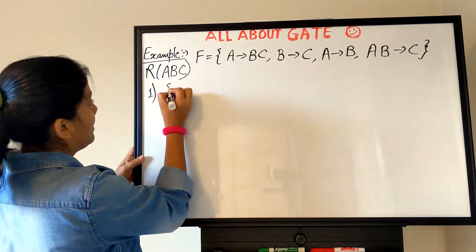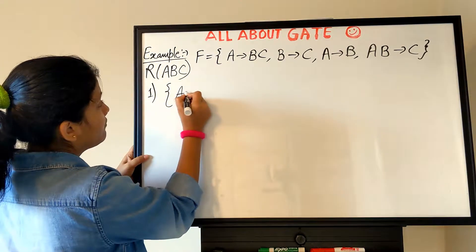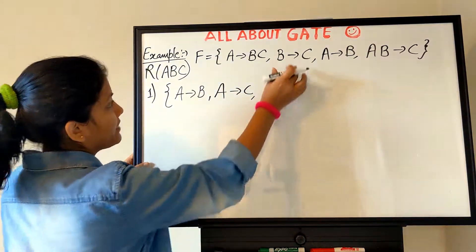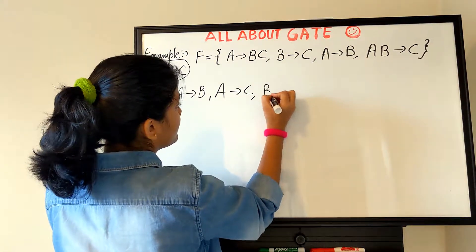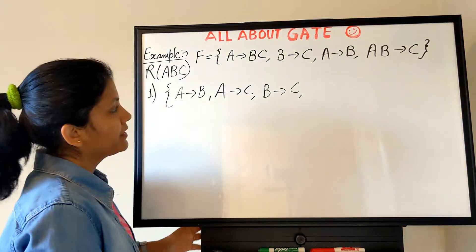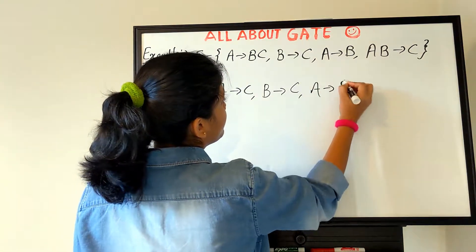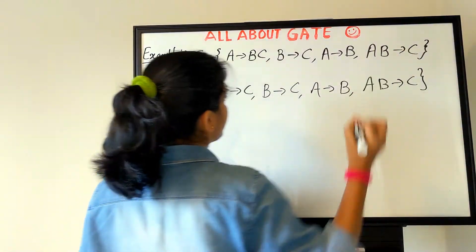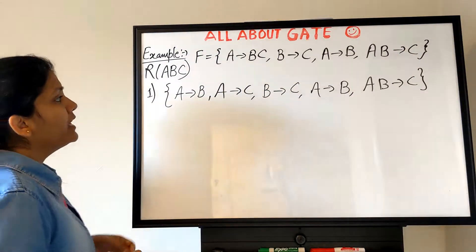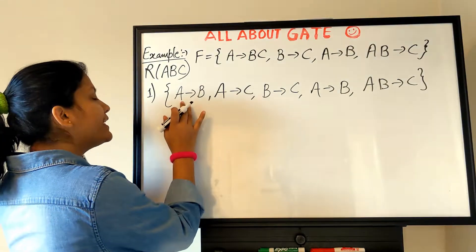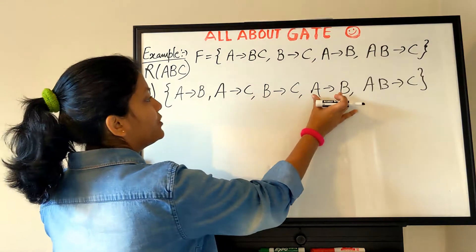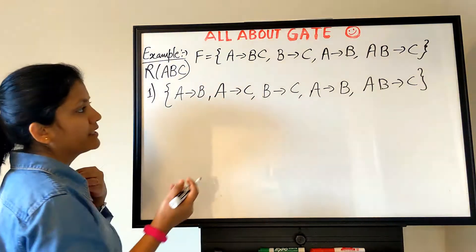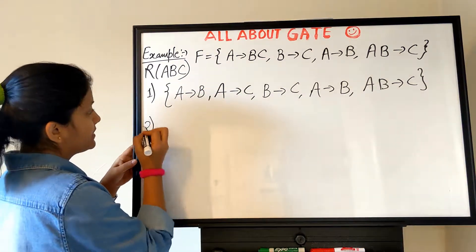The very first step: the first dependency A→BC will be decomposed as A→B and A→C. The next FDs remain as they are — no decomposition needed. Now at this level, I can see that A→B appears twice, so I would just count it once and ignore the duplicate.